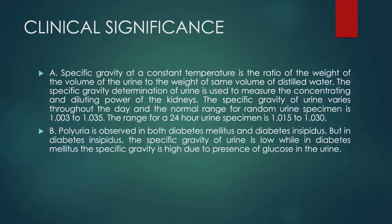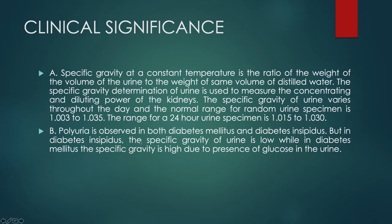In case of polyuria — when the volume of urine excretion is more than the normal range — this can be seen in diabetes mellitus and diabetes insipidus. In diabetes insipidus, the specific gravity will be low, whereas in diabetes mellitus, the specific gravity will be high, because in diabetes mellitus, glucose is present in the urine, increasing its density. In diabetes insipidus, there is no glucose in the urine, so specific gravity remains low.